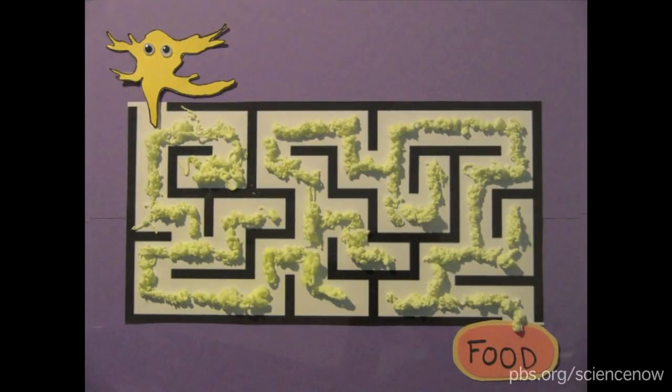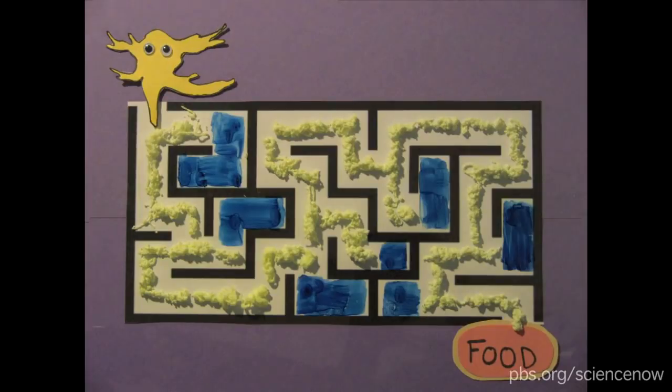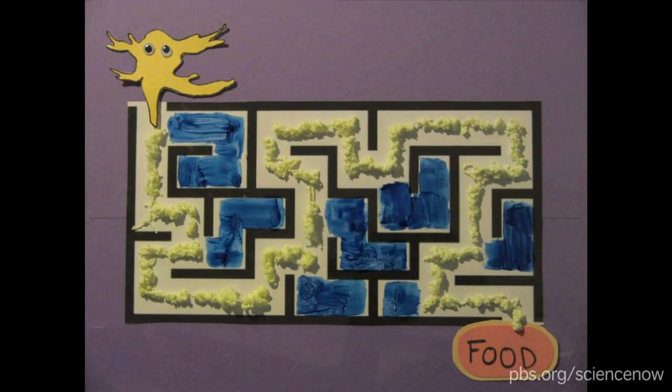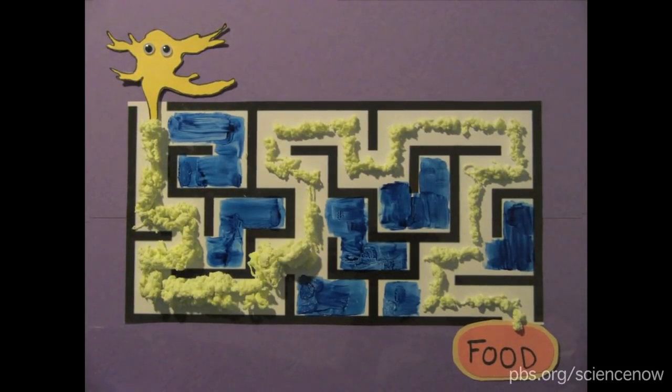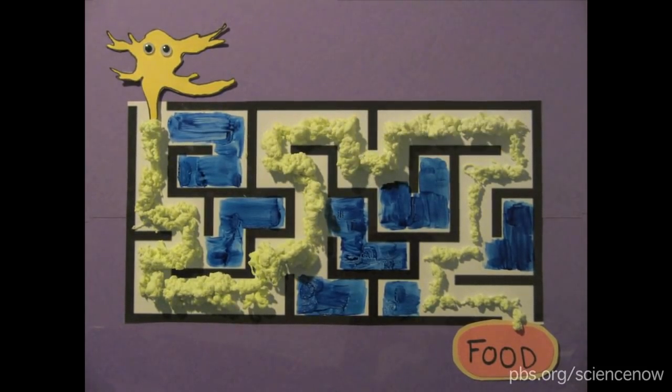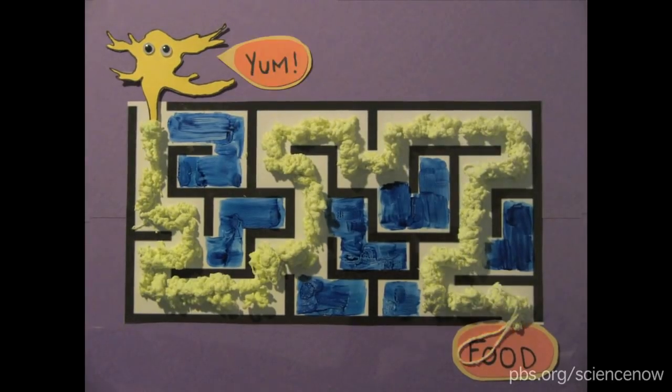It then retracts every tendril that didn't find food, leaving behind a trail of slime that acts as a kind of external memory. The trail reminds the slime mold that certain corridors are dead ends. It avoids these areas and grows exclusively along the shortest path from the beginning of the maze to the tasty treat.